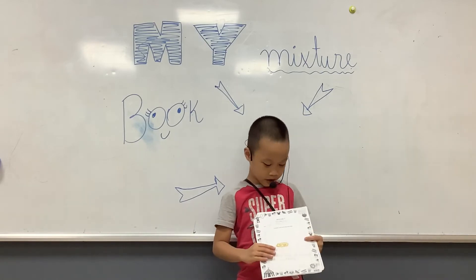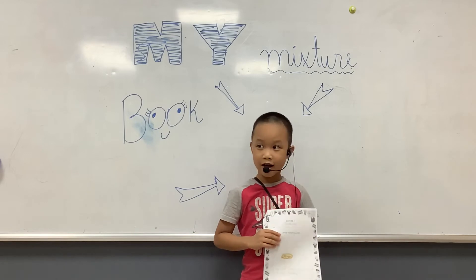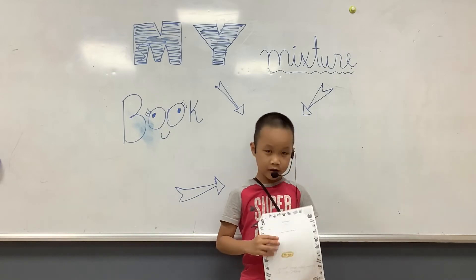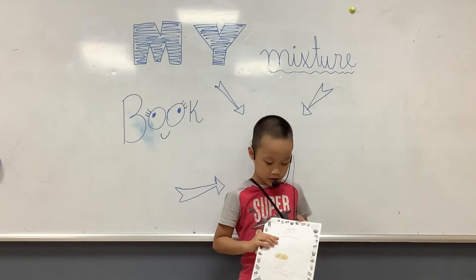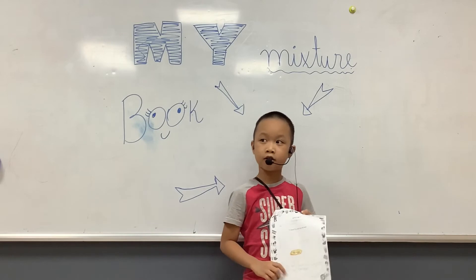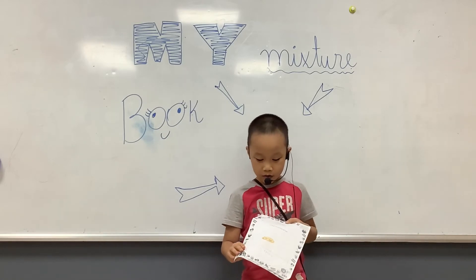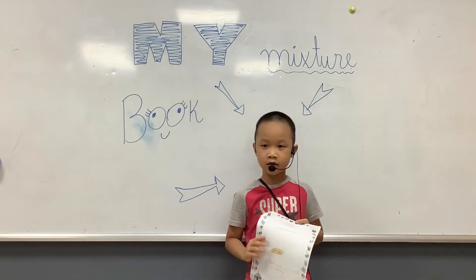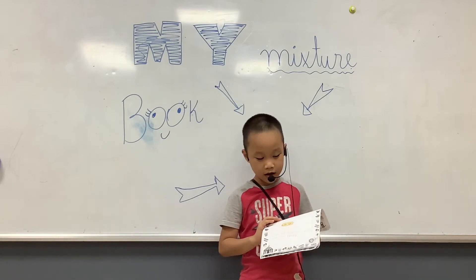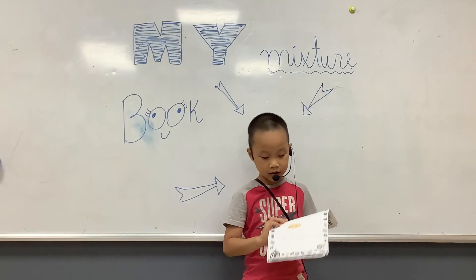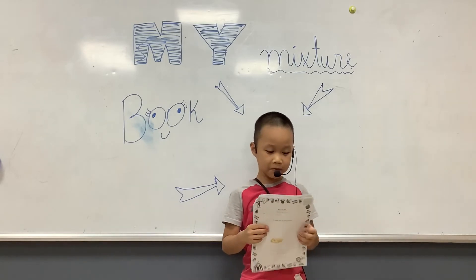Mixture 3 is hamburger. It's a solid. To make hamburger, we need bread, salad, sausages and some ketchup.